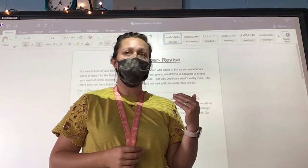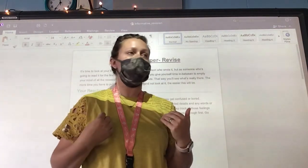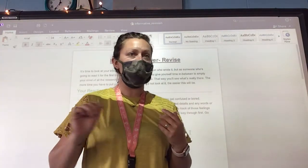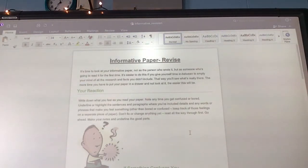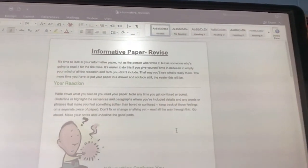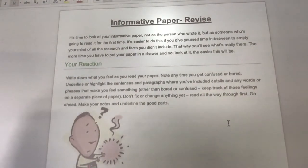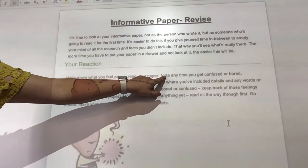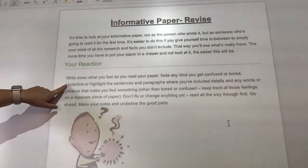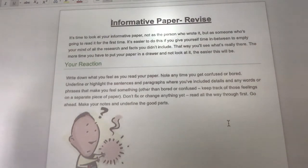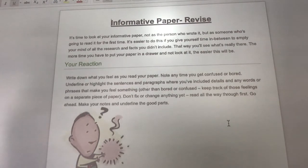As you're reading through it, think about what it's making you think about. What's your reaction? Jot that down on your loose leaf paper. Do not speed read — read it through slowly. Note on your loose leaf paper any time that you get confused or bored. If you're like, man, this part is really not that interesting — note that. Underline or highlight the sentences and paragraphs where you've included details, and any words or phrases that make you feel something other than bored or confused. You're going to keep track of all this on that loose leaf paper.